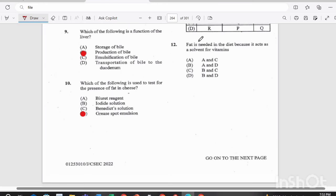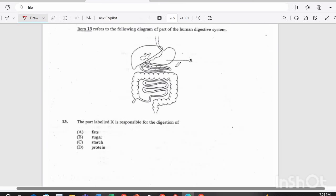Question 12. Fat is needed in the diet because it acts as a solvent for vitamins. Is it vitamin A and C, vitamins A and D, vitamins B and C, or vitamins B and D? The answer there is B. Vitamins A and D are fat soluble.